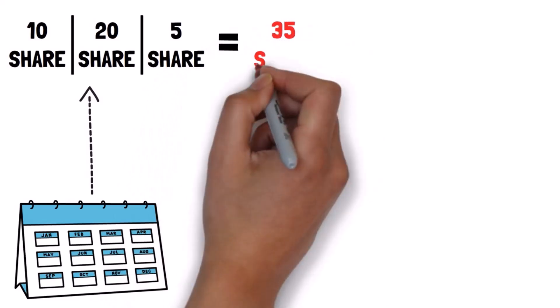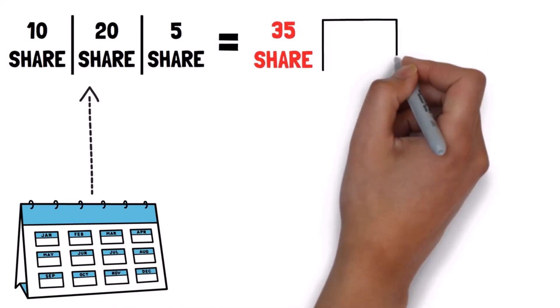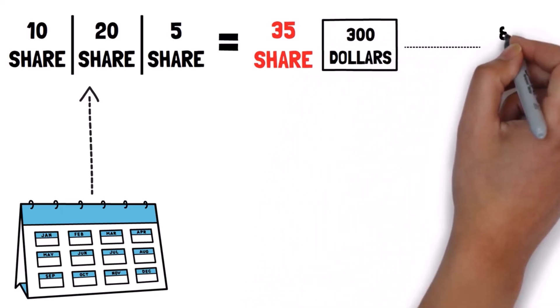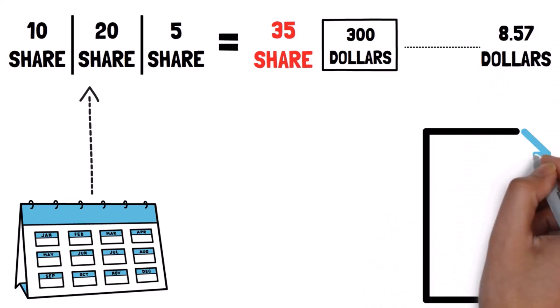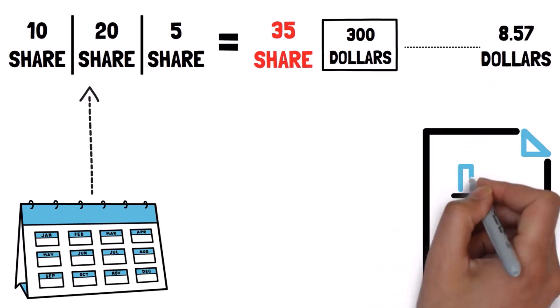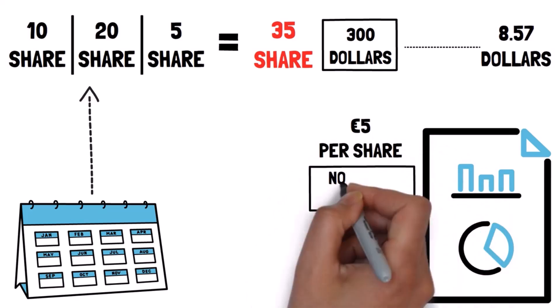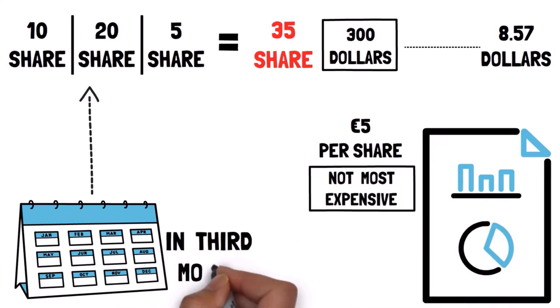So, after three months, you will have 35 shares for $300 at an average price per share of $8.57. The price per share is not the cheapest because in the second month, it was $5 per share, but it's also not the most expensive. In the third month, the shares were $20 each.